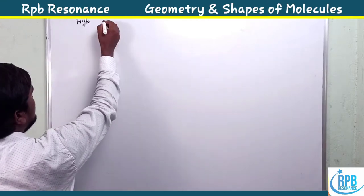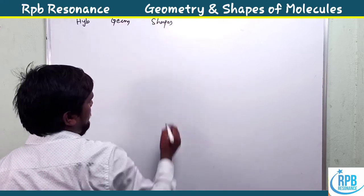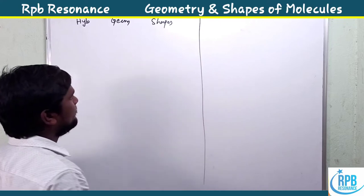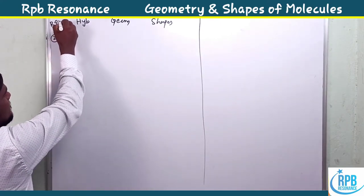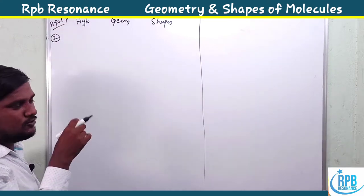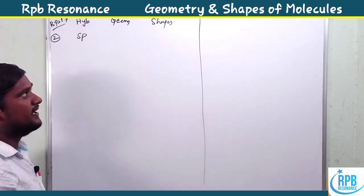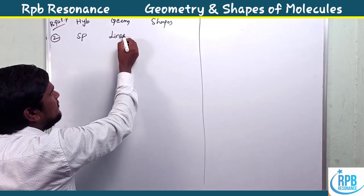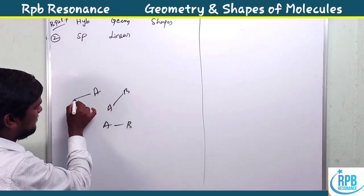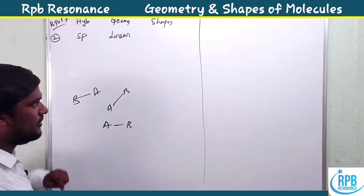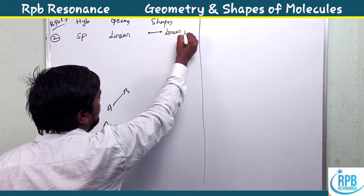Starting with geometry when total bond pairs plus lone pairs equals two: the hybridization is sp, the geometry of the molecule is linear, and the shape of the molecule is linear with a 180-degree bond angle. Any two atoms will use this type of geometry regardless of orientation.